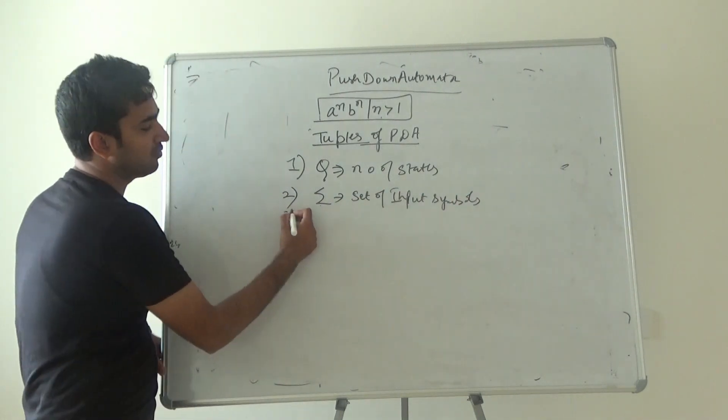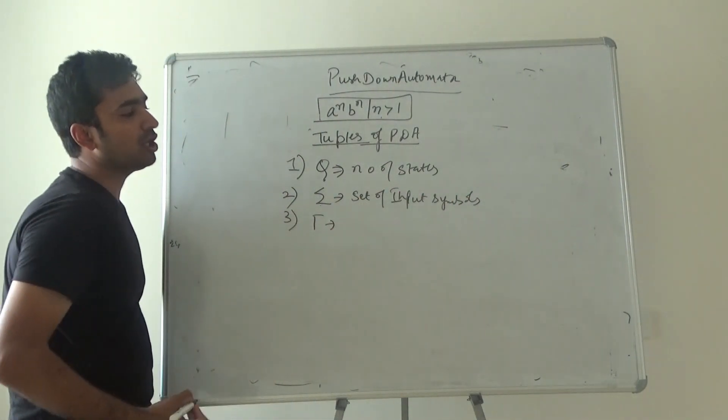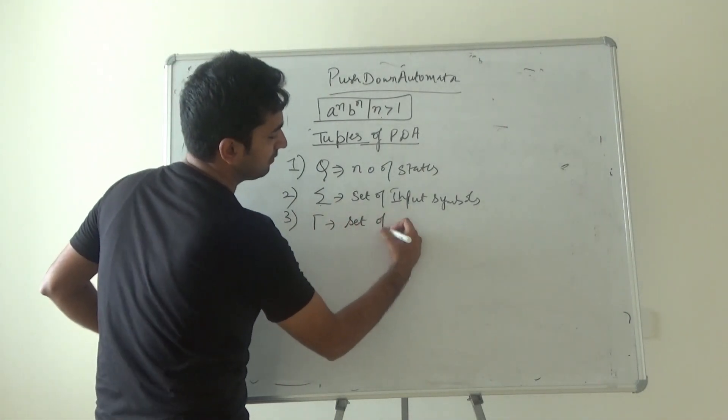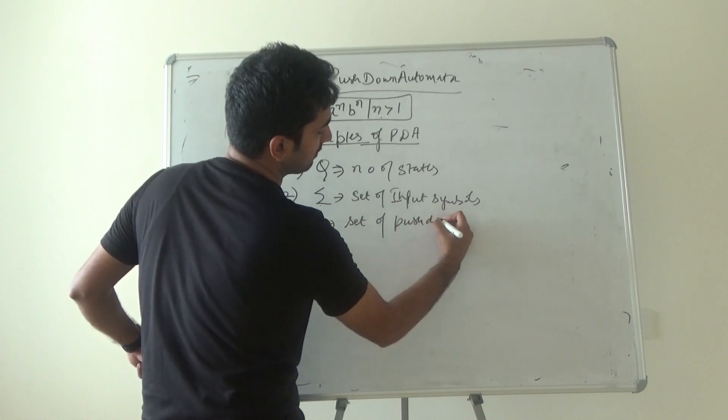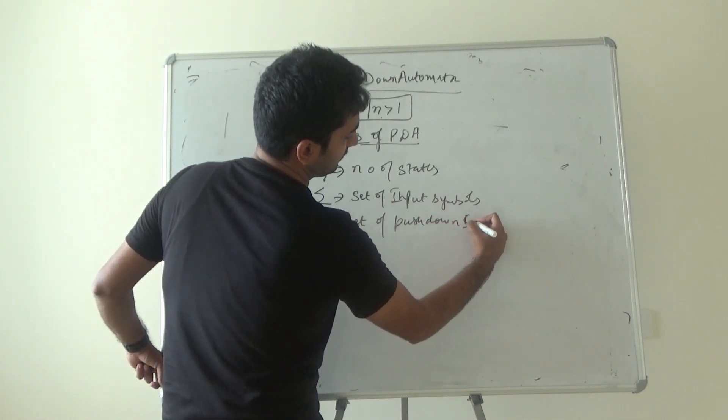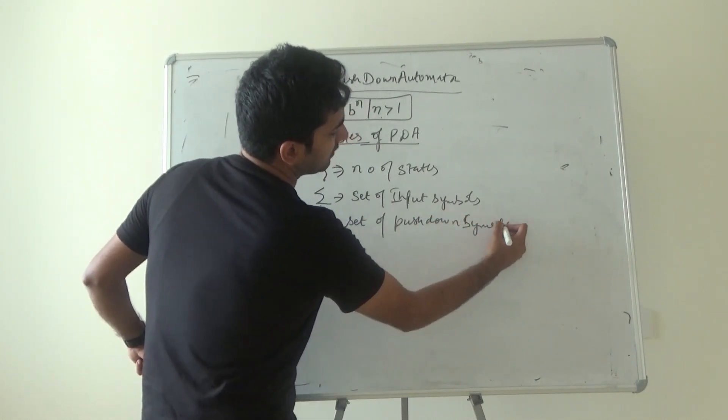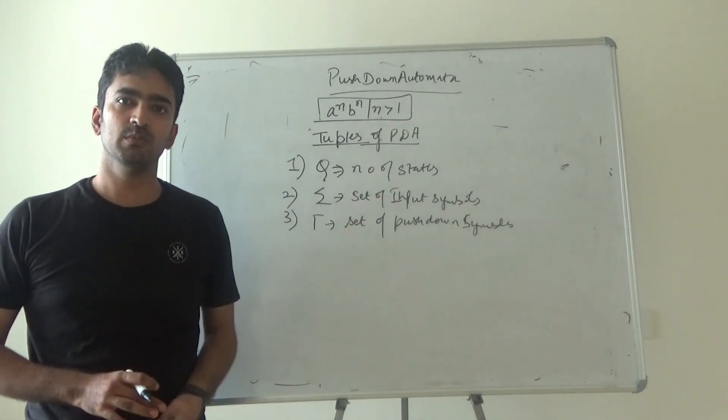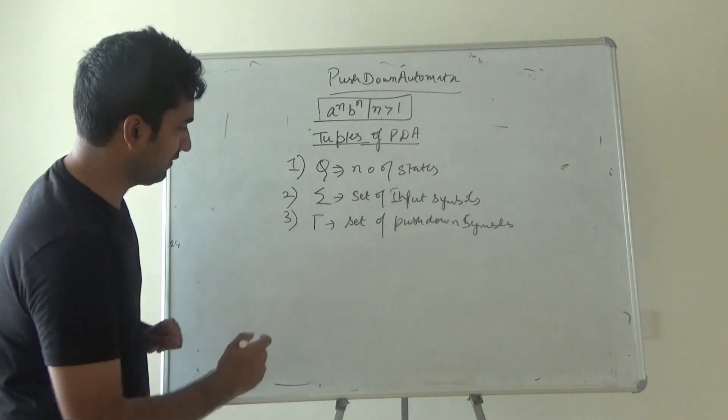Then we have got gamma. Gamma is actually representing over here as set of push down symbols. So guys, what is a push down symbol? Push down symbol is a symbol that represents that a push operation will happen.